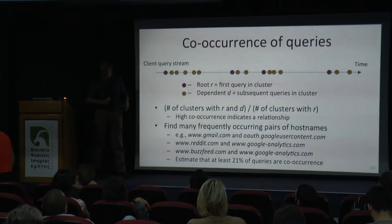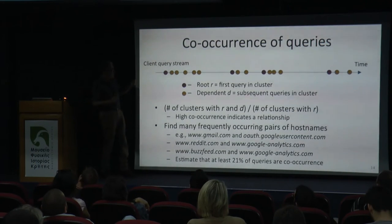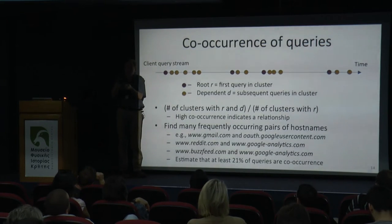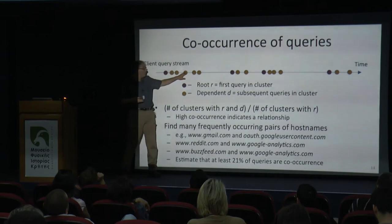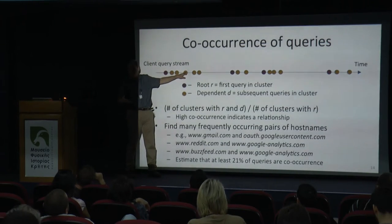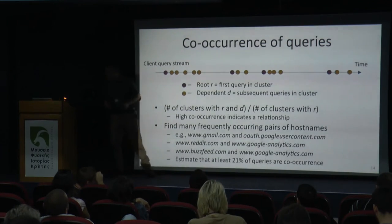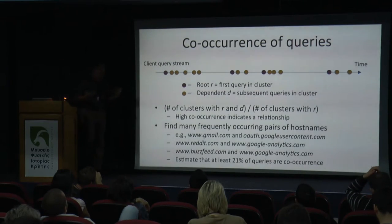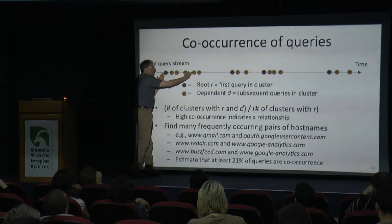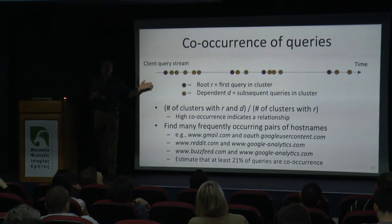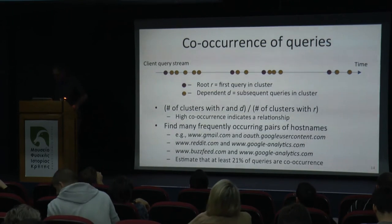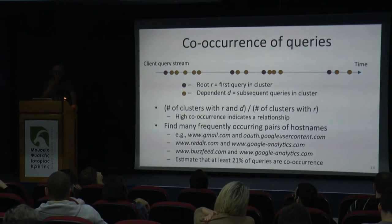We also tried to see if queries for different hostnames are dependent on each other — for example, CNN.com always having finance.cnn.com embedded. We tried to find frequent co-occurrences of dependent names on a root name, but this is blurred by DNS caching. We couldn't get much progress in this direction, though what little progress we made is in the paper.